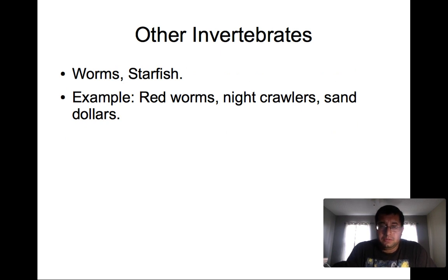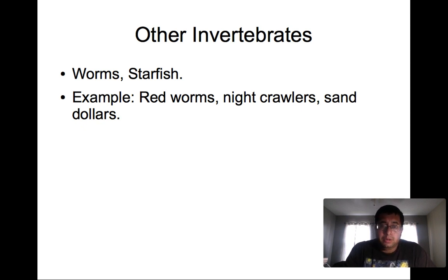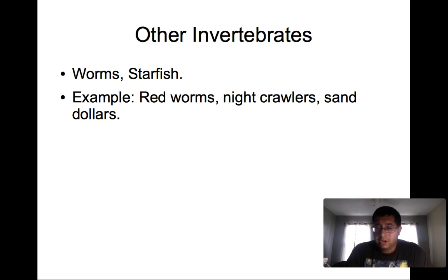Other invertebrates include worms like nightcrawlers — used for bait — red worms, and blood worms. We also see starfish, brittle stars, sand dollars, and horseshoe crabs — all good examples of other invertebrates found in the world.